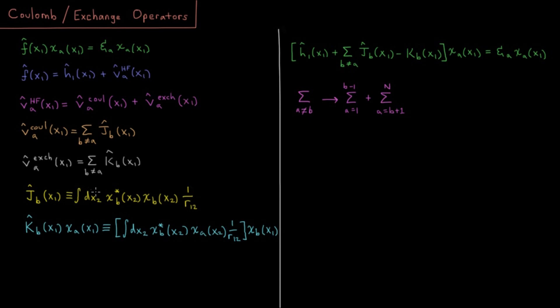Then we integrate that over how it interacts with that charge density over all space, and we're left with just the coordinates of electron one which are left over, giving us the electrostatic potential felt by electron one due to the presence of an electron in spin orbital B.